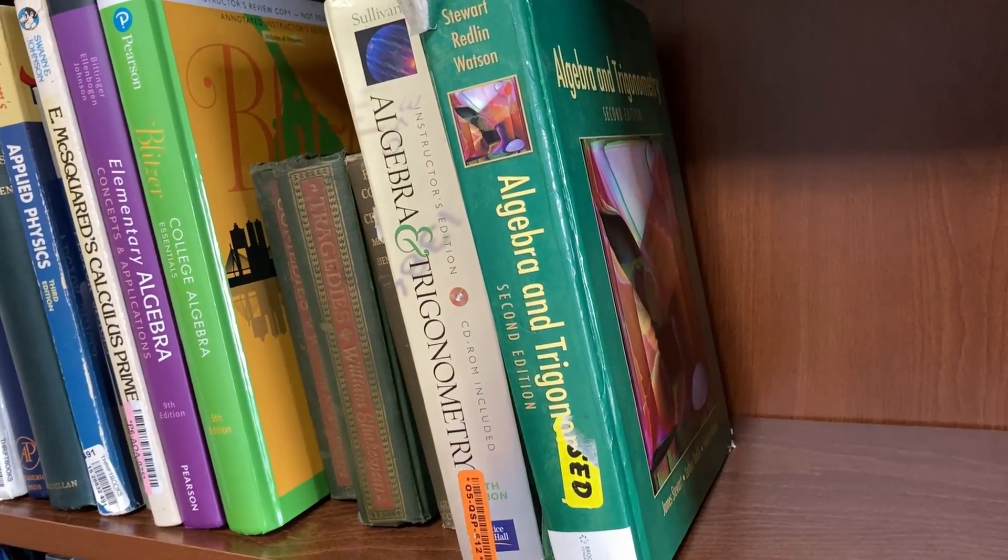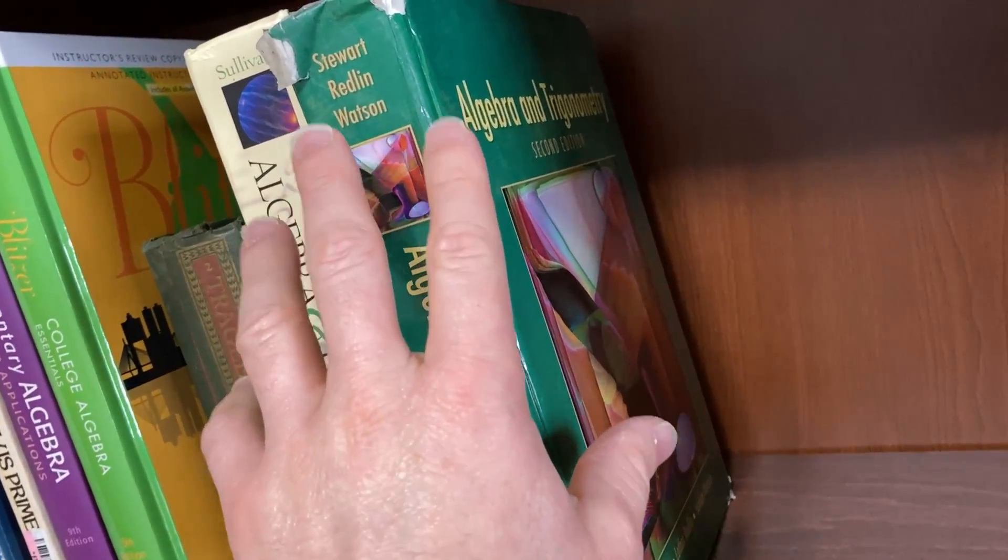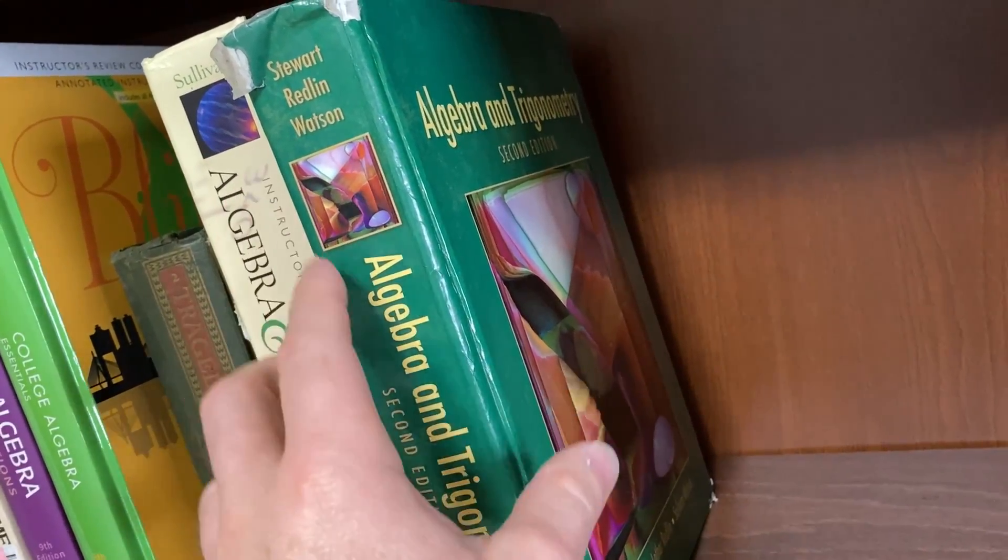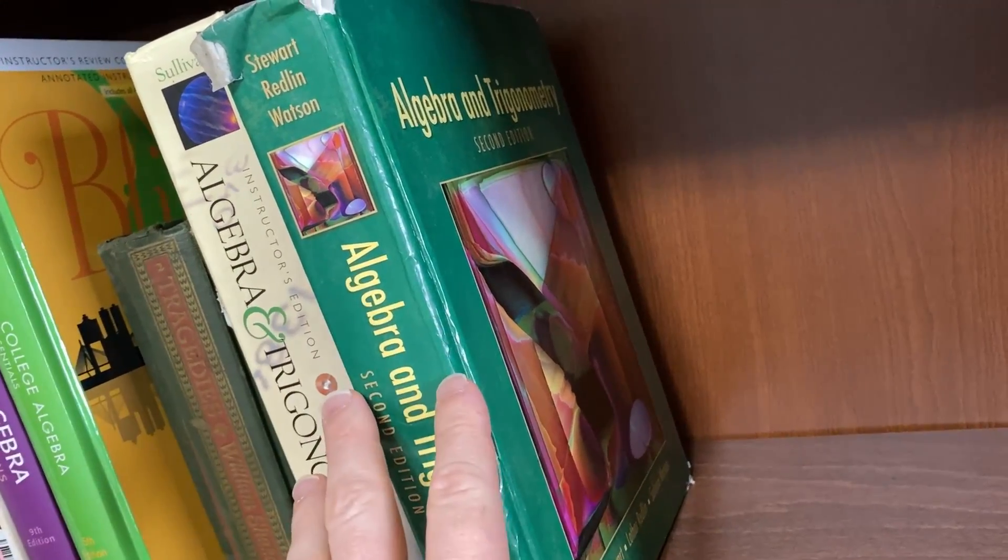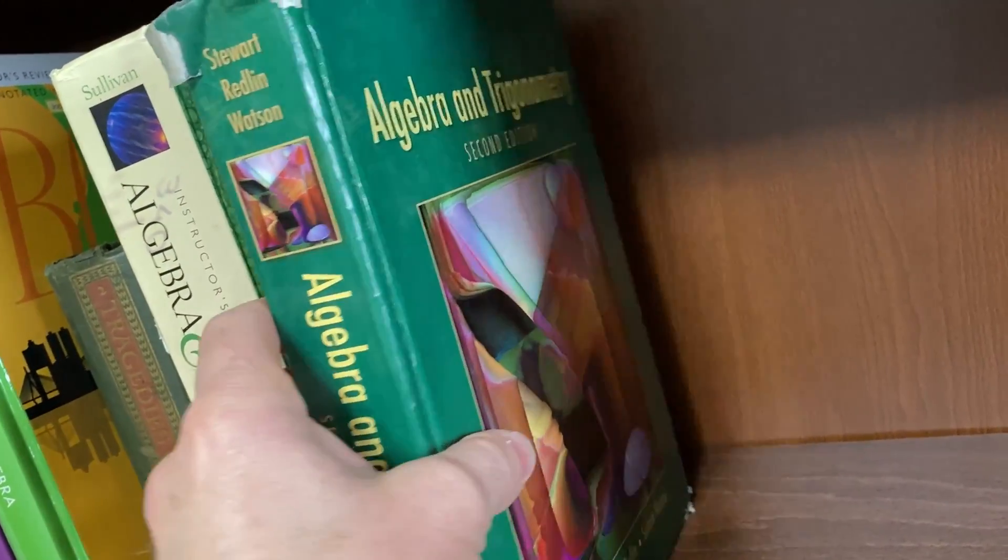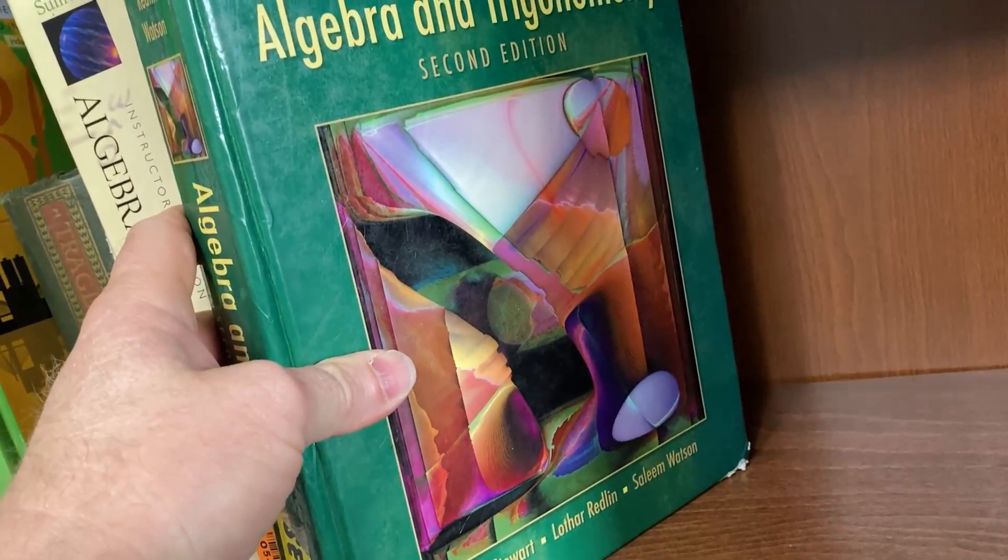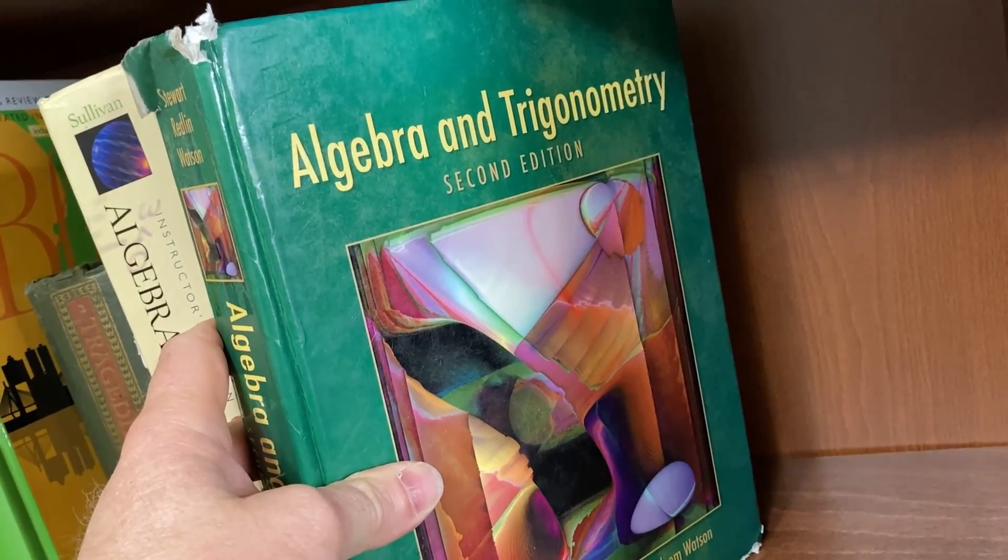So the first thing you have to do is get a book. I'm going to pick this one because this is a book that is very easy to get. It's probably not that expensive and there's lots of books like it. This is the one by Stuart, Redlin, and Watson. It's a book on algebra and trig, the second edition.